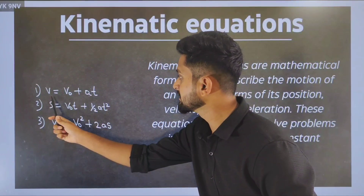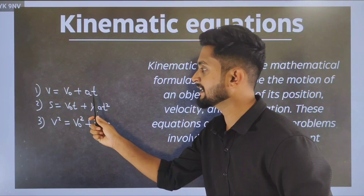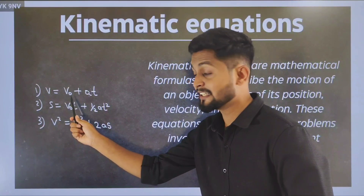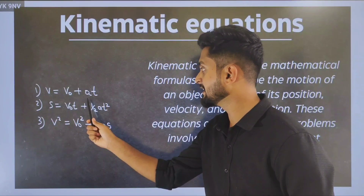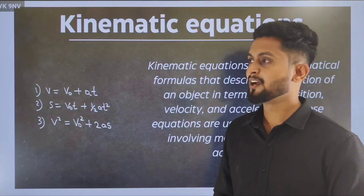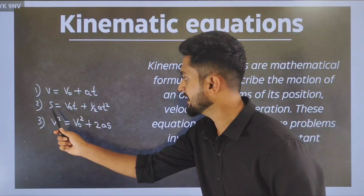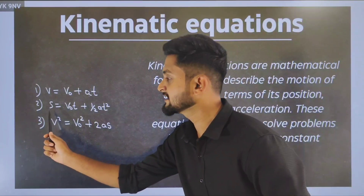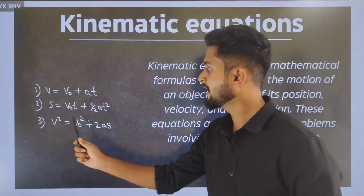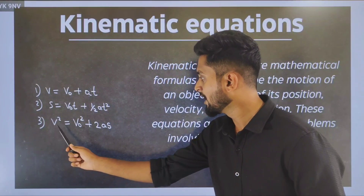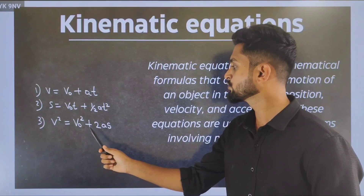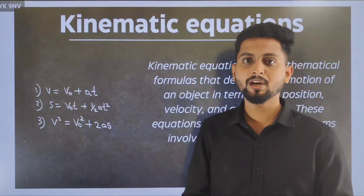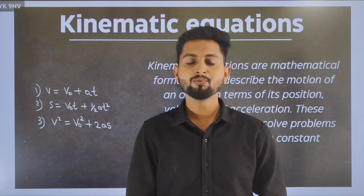The first one is V = V₀ + AT, where V refers to final velocity, V₀ means initial velocity, A is acceleration, and T means time. The second kinematic equation is S = V₀T + ½AT², where S refers to displacement. The third kinematic equation is V² = V₀² + 2AS. These are the kinematic equations we are going to derive today, one by one.